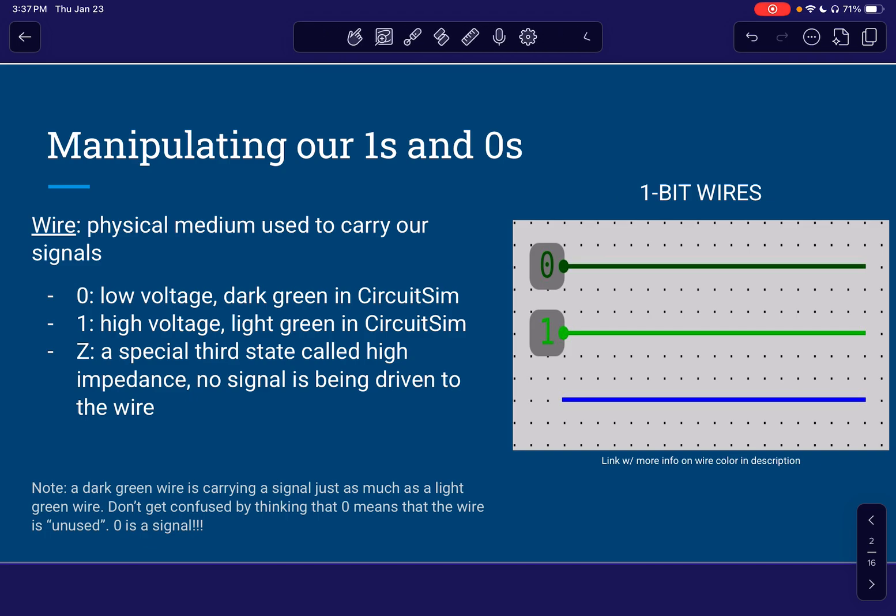And in circuit sim, as you can see over here on the right, a one-bit wire has three distinct states it can be in. First one up here at the top is dark green, and this means the wire is carrying a low voltage signal of zero. Similarly, right here, light green means it's carrying a high voltage signal of one.